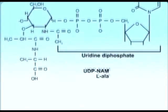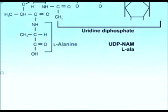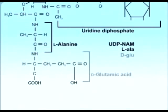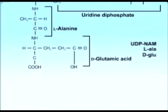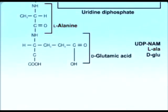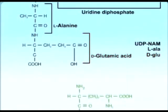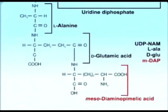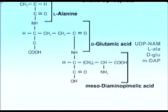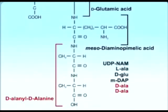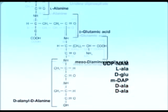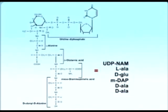Special adding enzymes are used to add these amino acids so that tRNA and ribosomes are not involved. In the case of Escherichia coli, L-alanine is added first, then D-glutamic acid, then meso-diaminopimelic acid. Finally, the dipeptide D-alanine-D-alanine is added to form the pentapeptide side chain.